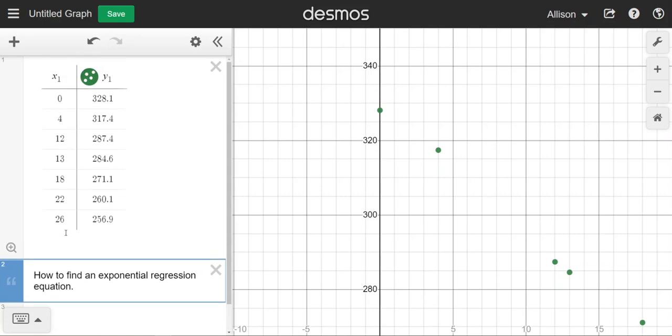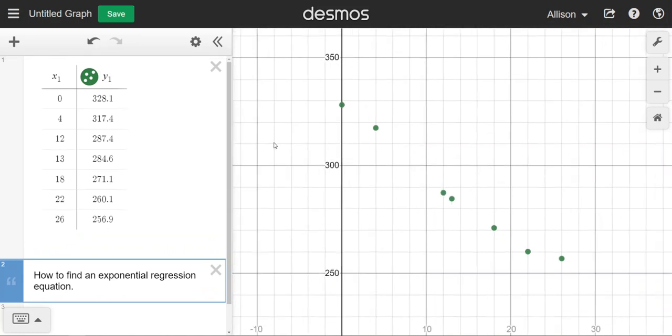We're going to look at how to find the equation of an exponential regression. So I've got a data set already typed in here and if I zoom in on my data set, I can see that it fits what an exponential function should look like.